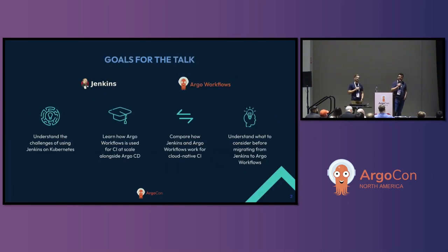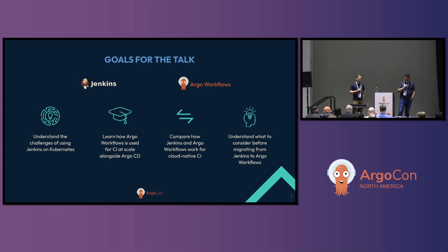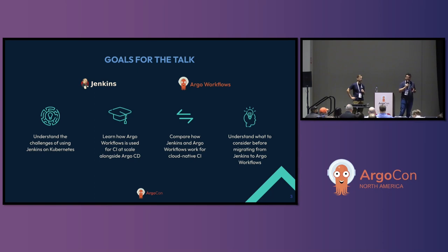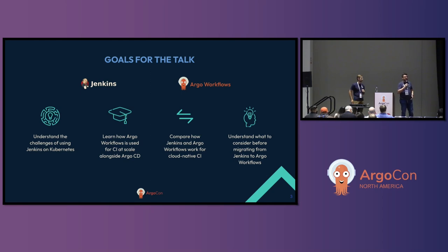Today, the goal for this talk is really first to understand the challenges of running Jenkins on top of Kubernetes at scale. Then we'll see how you can use Argo workflows alongside Argo CD to run your CI/CD pipelines. We'll go over the concepts of Jenkins and Argo workflows, see how they map, and also go over a quick example to show the difference between them. And finally, if we've convinced you, we'll go over the things to consider if you decide to migrate from Jenkins to Argo workflows.